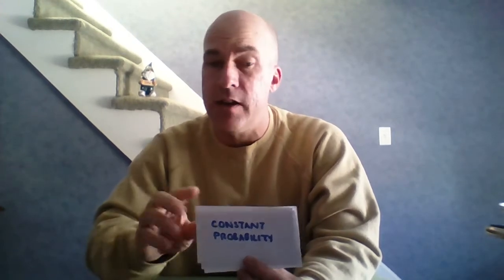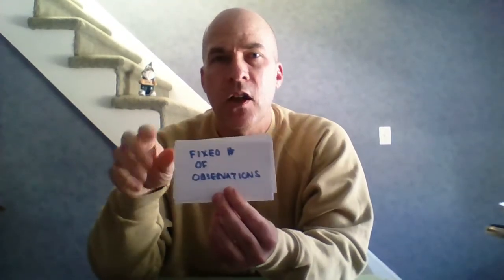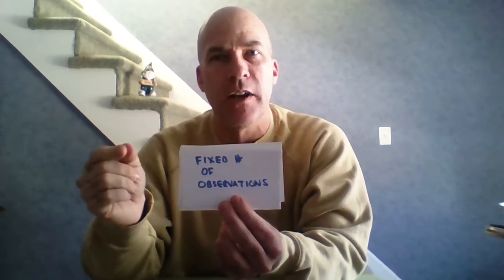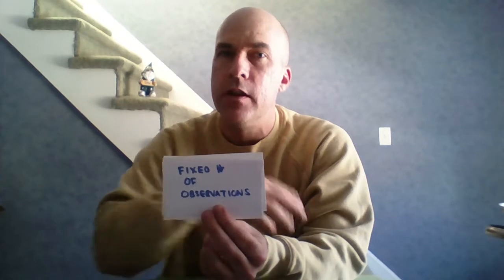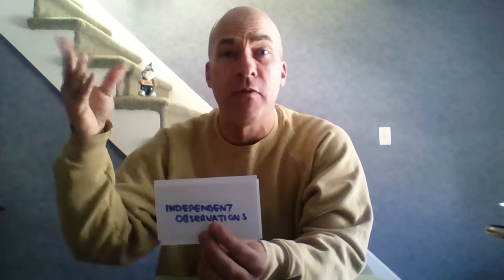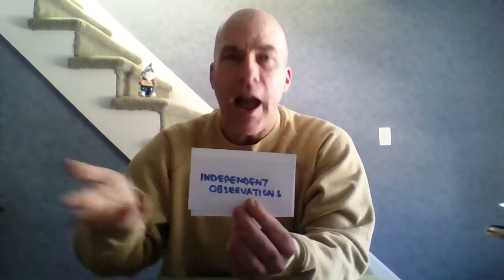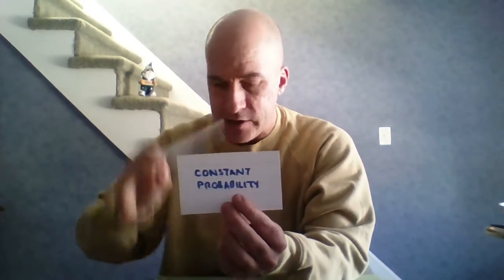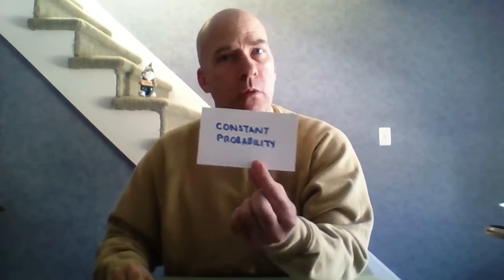Which of those conditions is the same in geometric probability and which ones are different? Do I have success and failure? Yes — male fish and female fish, so that's the same. Do I have a fixed number of observations? That's what's different: the first time it took two trials, the second time nine trials — the number of observations is not fixed. Do I have independent observations? Yes, every time I reach in I have a 30% chance of success. Do I have a constant probability? Yes, 30% and 70%.